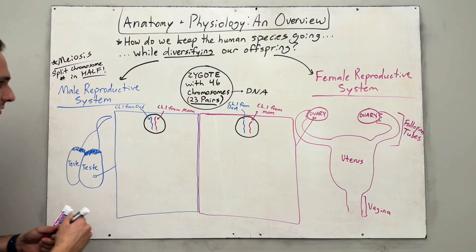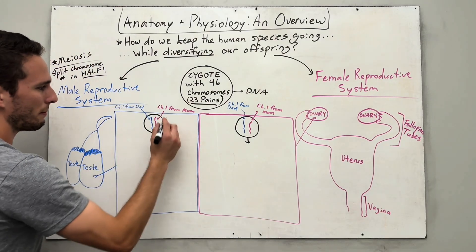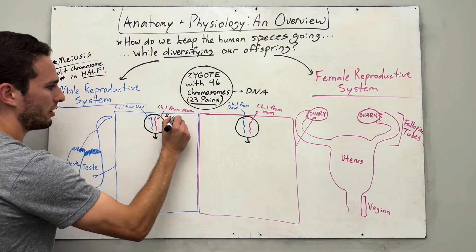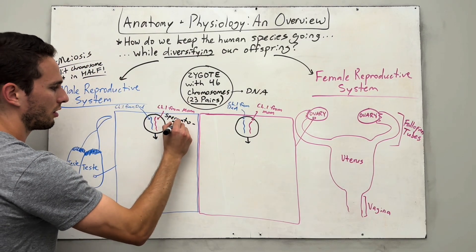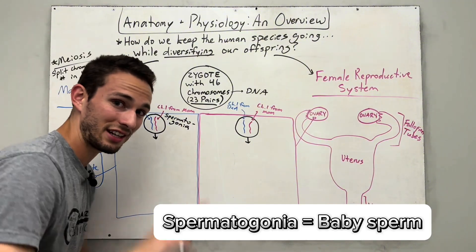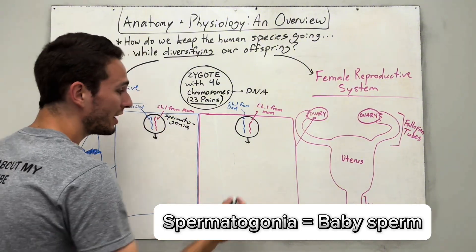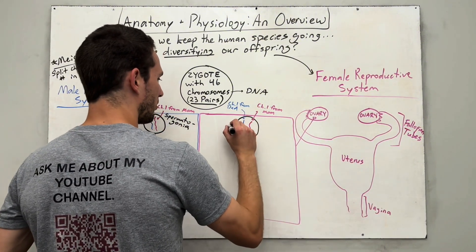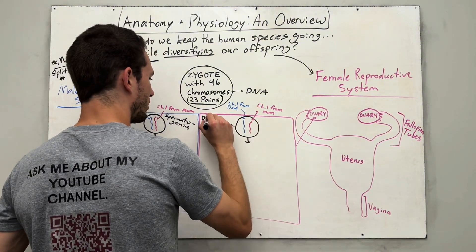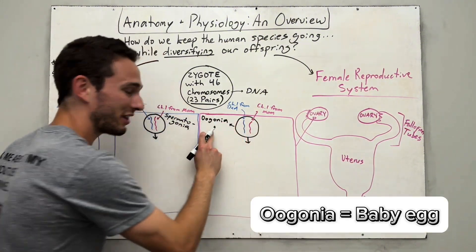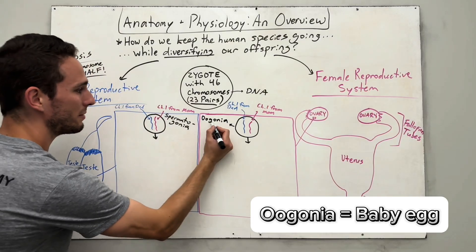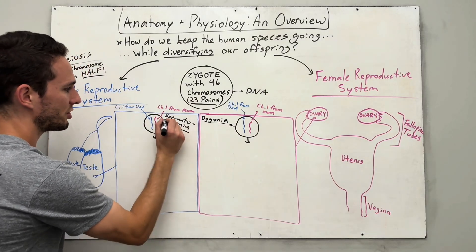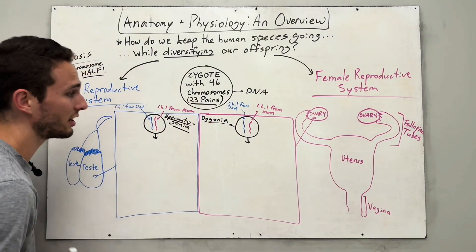This cell in the male is actually going to be called a spermatogonia, literally translating to 'baby sperm,' and this is going to be called an oogonia, literally translating to 'baby egg.' So, baby sperm and baby egg.